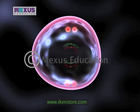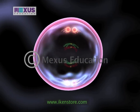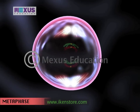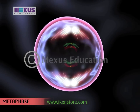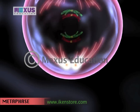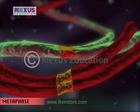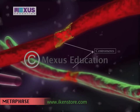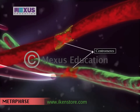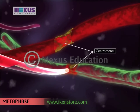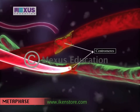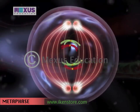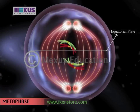In the next stage known as the metaphase, spindle-like structures from the centrioles attach themselves to the centromeres of the chromosomes and align the chromosomes at the equatorial plate.